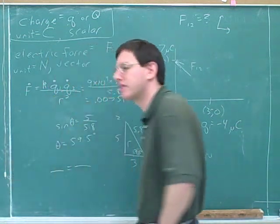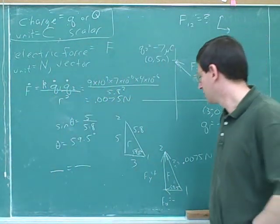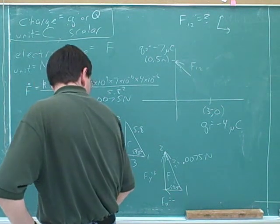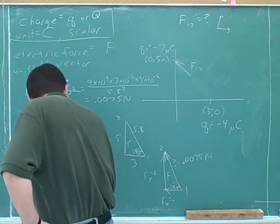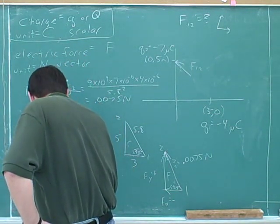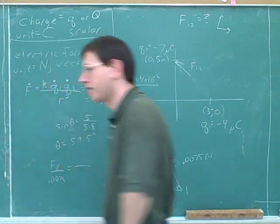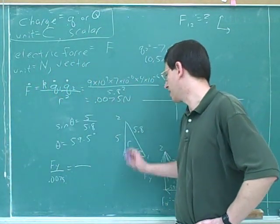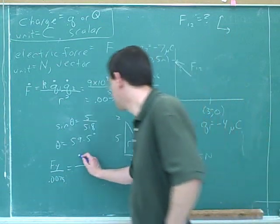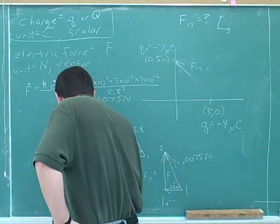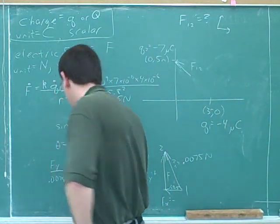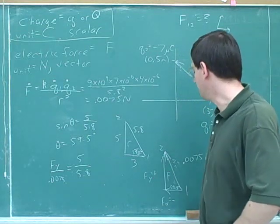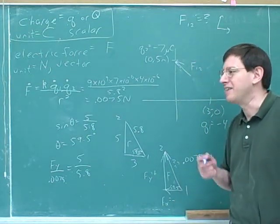So how do we set this up using similar triangles? We set up a ratio — they're proportional, so we could do the ratio of f sub y to 0.0075. What corresponds to f sub y in this triangle? Then we just do algebra to solve, and that would give us this number here. You could do something similar to find the x component.